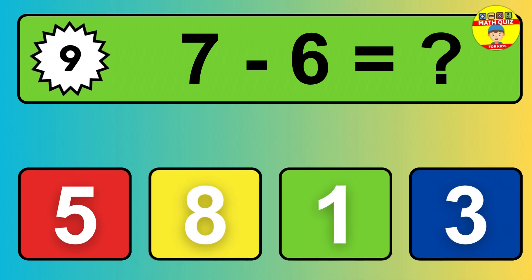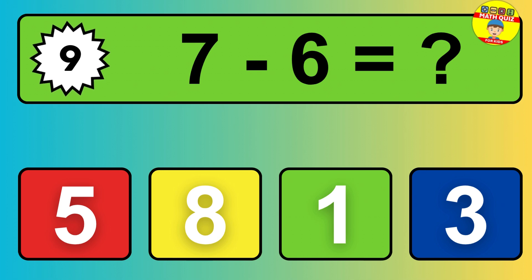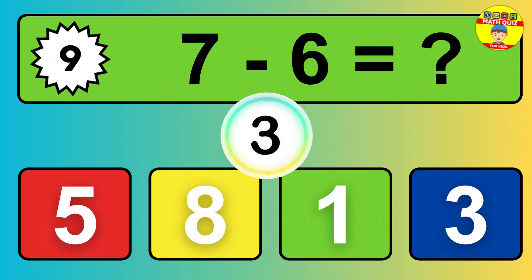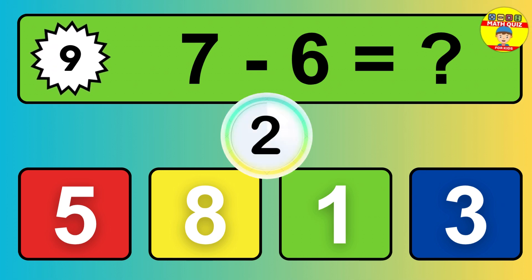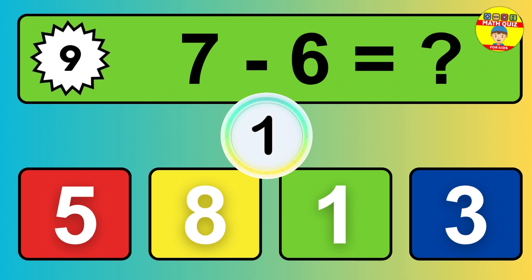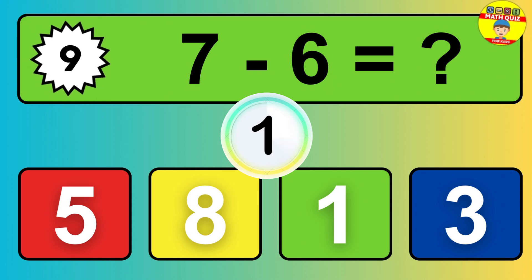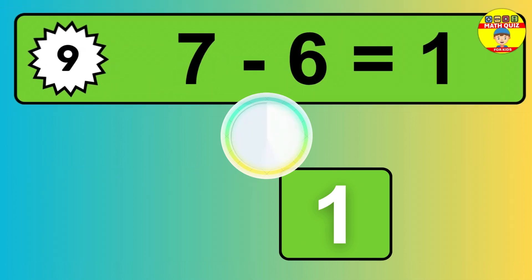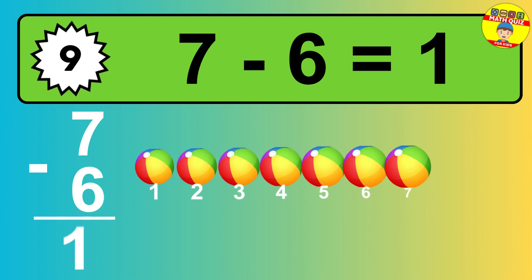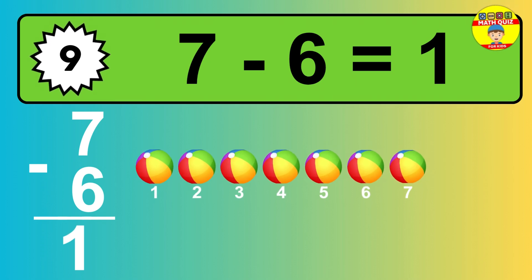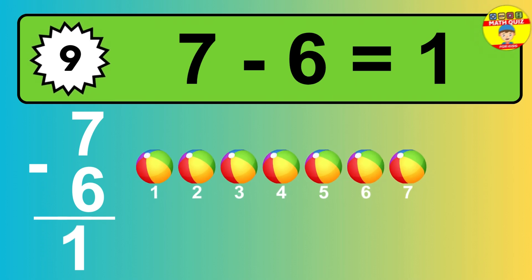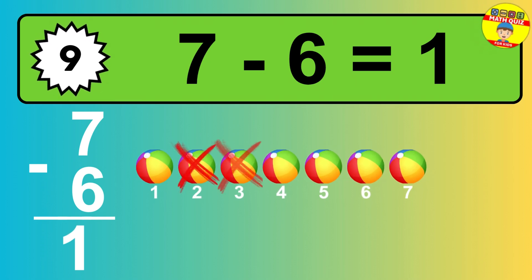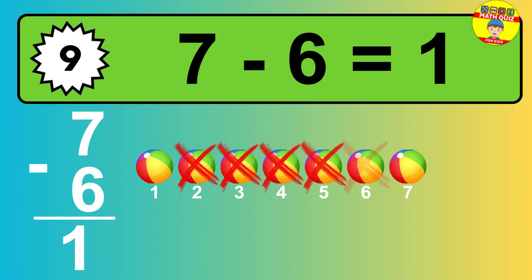Question 9: 7 minus 6 equals what? The answer is, 7 minus 6 is 1. Let's count it: 1.